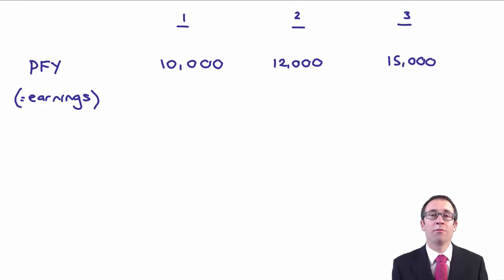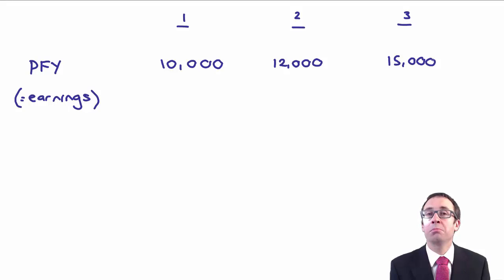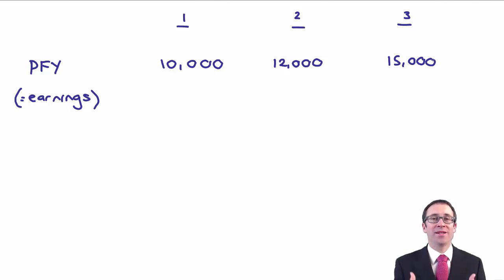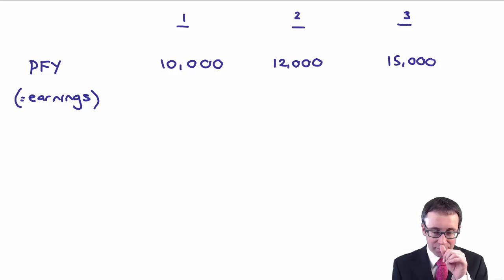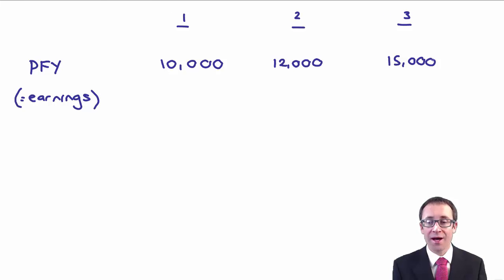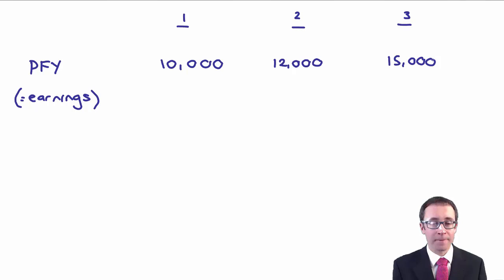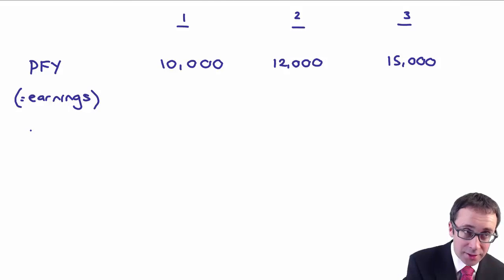If I were to ask you how that company is performing, the answer would be it's performing better each year. It's gone from 10,000 in the first year to 12,000 — a growth of 2,000 — and then a further 3,000 growth into that third year. So everything looks rosy. But watch this.